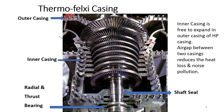The turbine casing is a flexi thermo casing — we call it a thermo flexi casing. There are two casings in the turbine: the outer casing and the inner casing. We call them flexi casing because the inner turbine casing can slightly expand when it is heated and contract when it is cooled. An air gap is provided between the two casings to reduce heat loss as well as to reduce noise pollution.